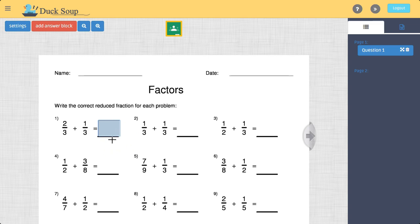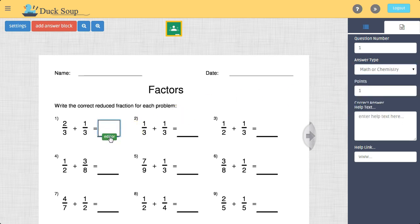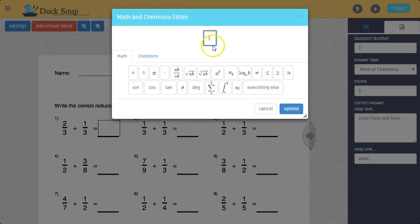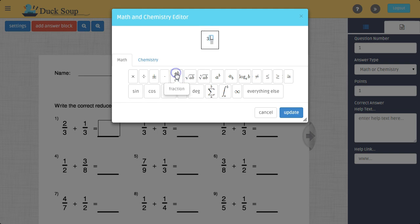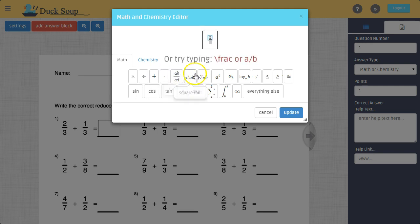But if I wanted to actually answer this question as a fraction, I can switch to a math or chemistry answer. I can click in here, click the editor, and I could say the correct answer is three over three. Or I could just hit the slash—hang on—so it'll be this right here, three fourths. Update and it'll format it like a fraction.